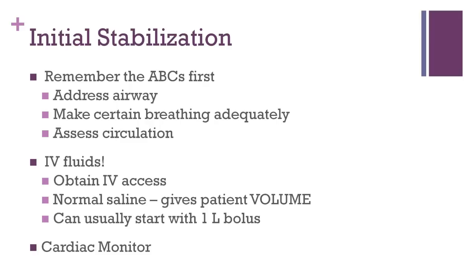Additionally, certain hemodynamic parameters, like central venous pressure, can only be measured through a central line. For fluids, normal saline is best because its higher salt content promotes retention of fluid in the intravascular space. Usually, we start with a 1-liter bolus and reassess. If a patient has known congestive heart failure, sometimes a 500-milliliter bolus might be used to avoid fluid overload. Finally, all of these patients should be on a continuous cardiac monitor.